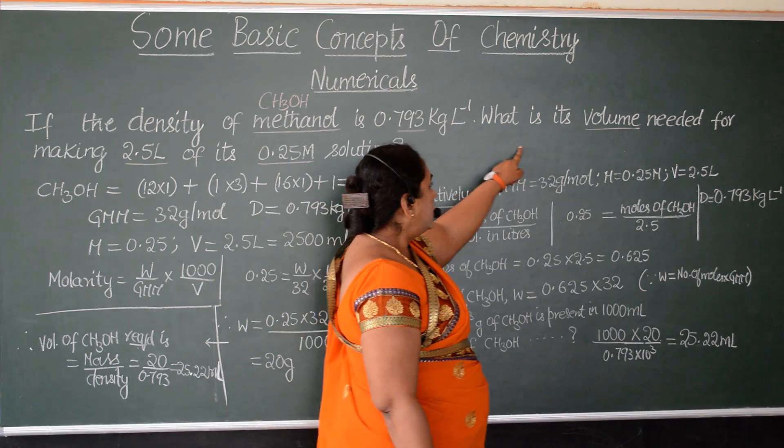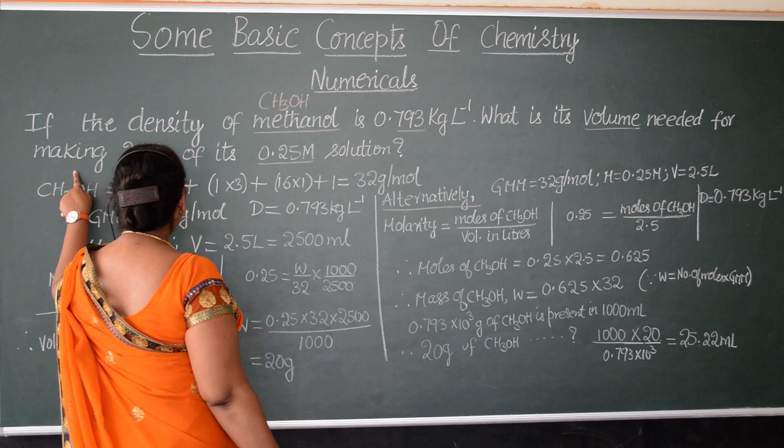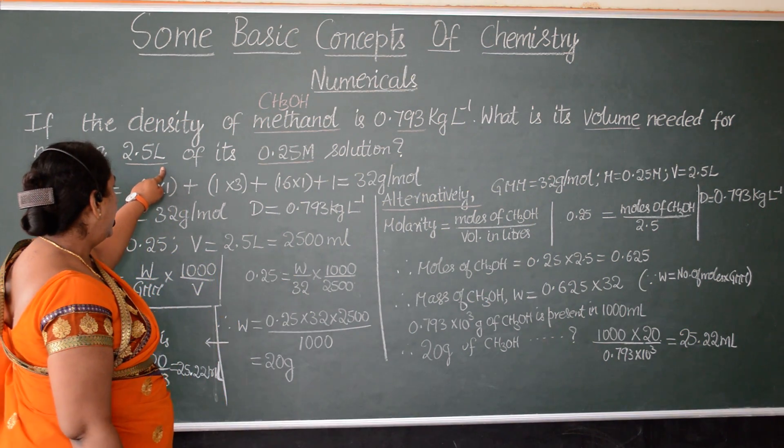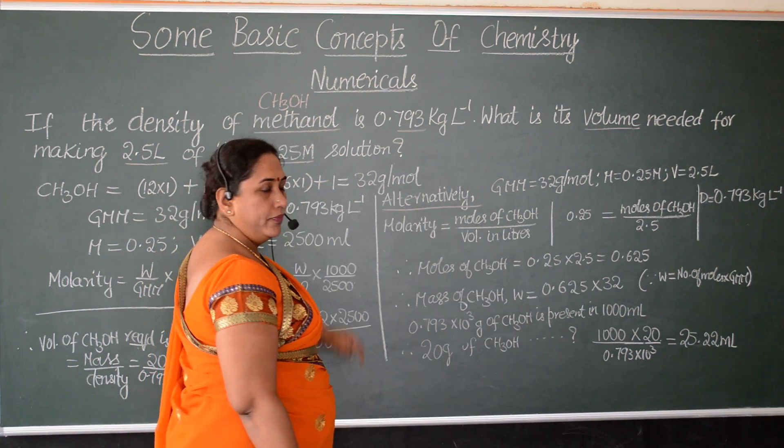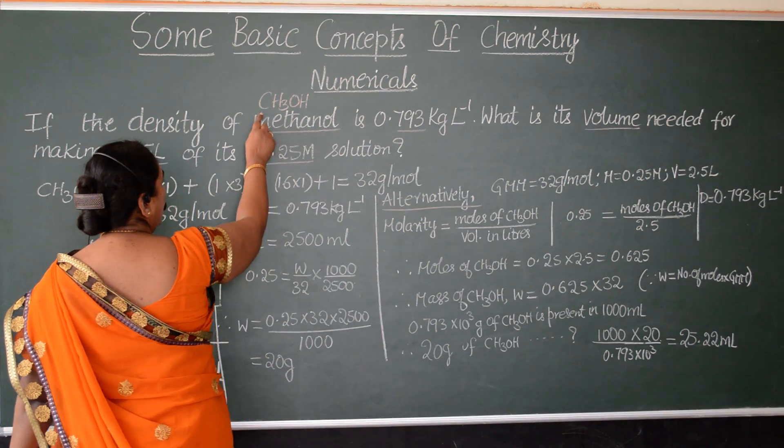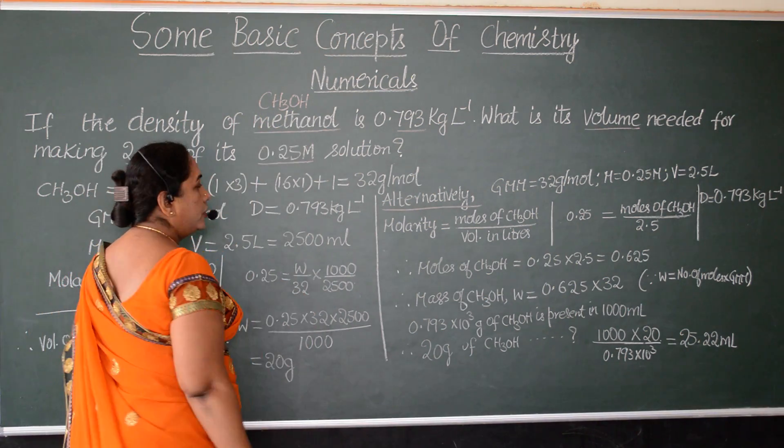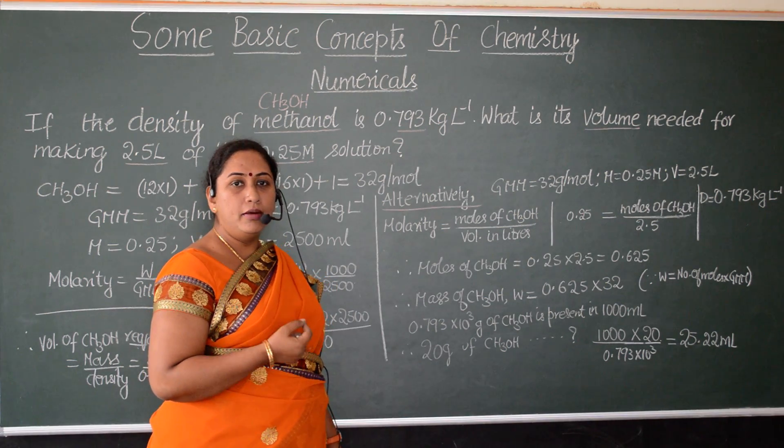what is its volume needed for making 2.5 liters of its 0.25 molar solution? So, what is the molecular formula of methanol? CH3OH. Methyl alcohol, or otherwise, is also called methanol.